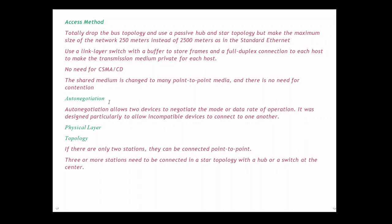The data rate of standard Ethernet is 10 Mbps, but for Fast Ethernet it is 100 Mbps. Auto-negotiation allows two devices to negotiate the mode or data rate of operation. It was designed particularly to allow incompatible devices to connect to one another. For physical layer topology, if there are only two stations, they are connected point-to-point. If more than two stations, they will be connected in a star topology with a hub or switch at the center.